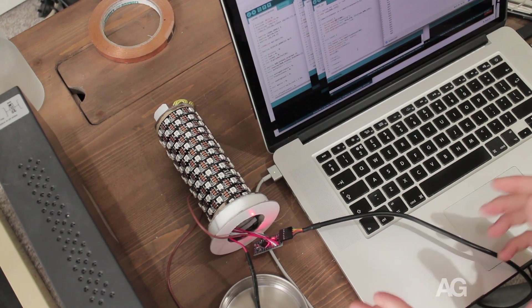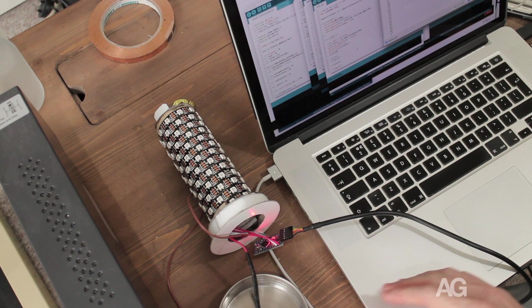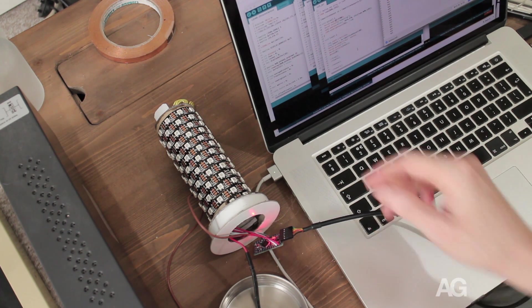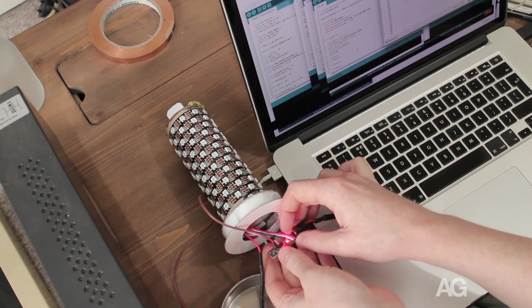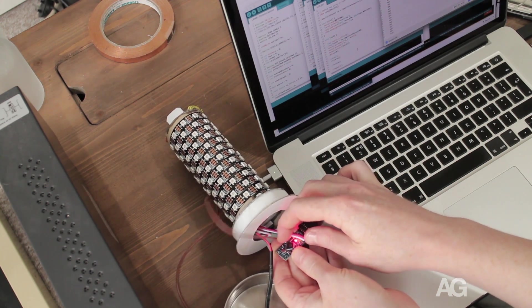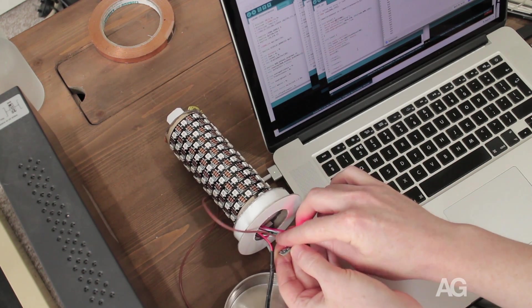To make this all work I'm using the Arduino's capacitive sense library. Now to use this library you connect two pins together using a high value resistor, in my case I'm using a 1 mega ohm resistor, and then the library pulses one of those pins.